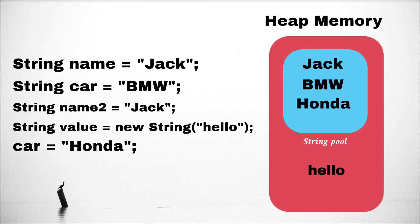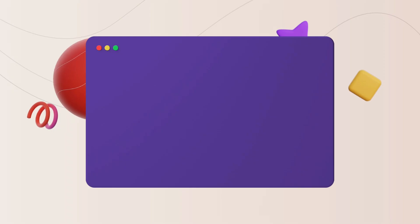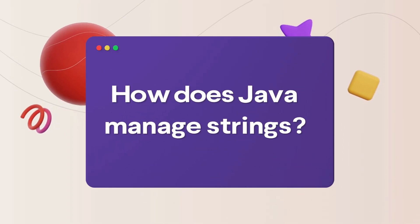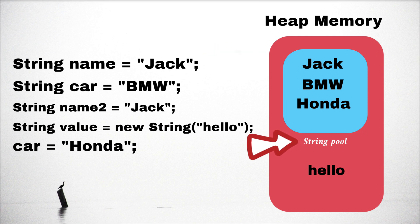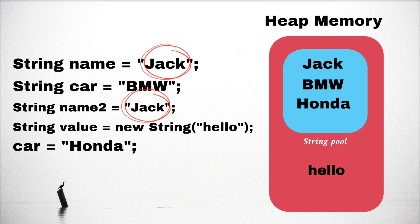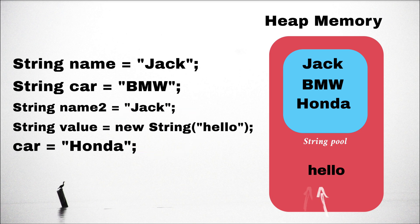Let's recall what we have learned in this video. First, how Java handles strings: inside the JVM there is heap memory, and inside heap memory there is a string pool. All string values are stored inside the string pool, and these values are unique. If two different variables have the same value, the heap memory contains only one value and both variables share the same address. If we create a string with the new keyword, it will be stored outside the string pool, inside the heap memory.